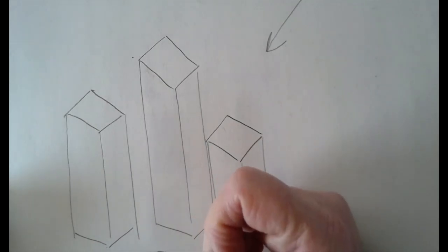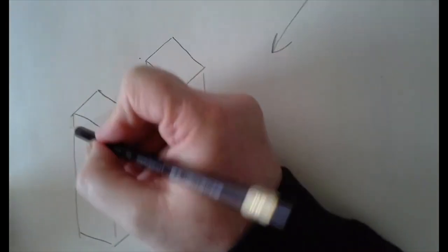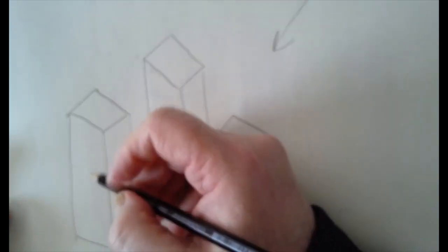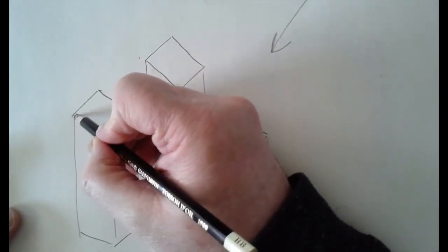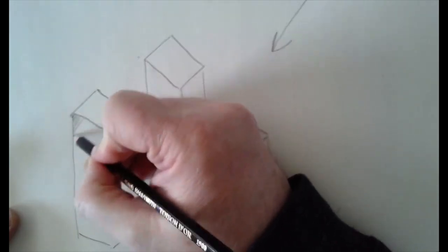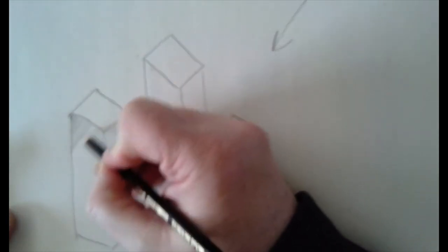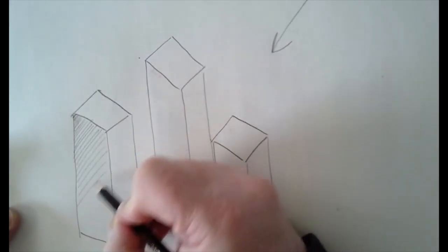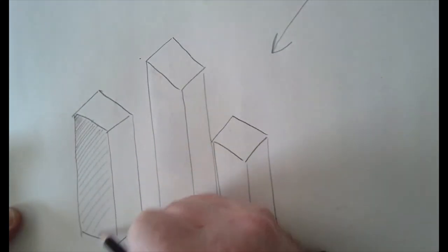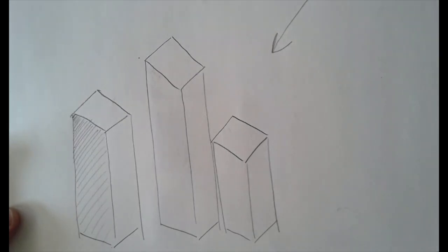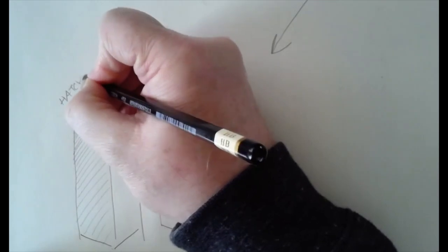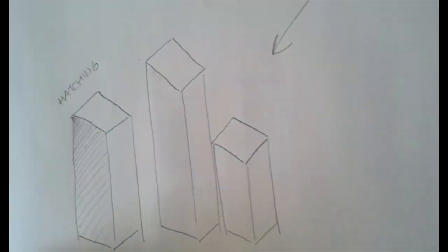All right. Our first shadow is going to be on this side of the building and we're going to be using hatching. I'll write that up here for you.